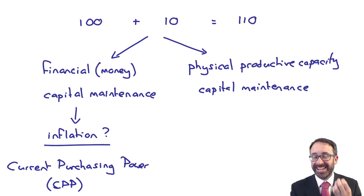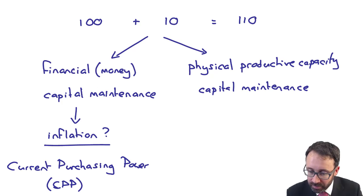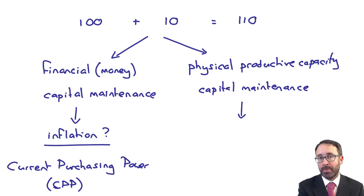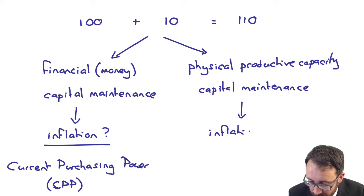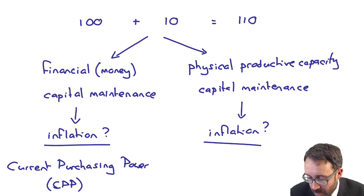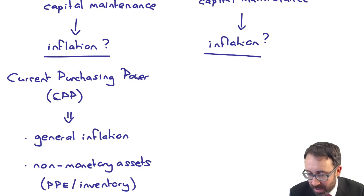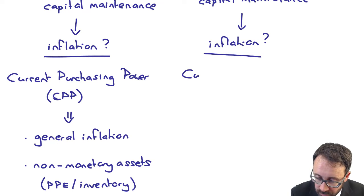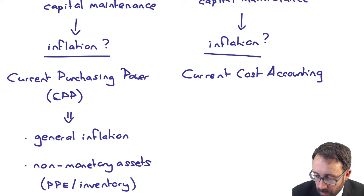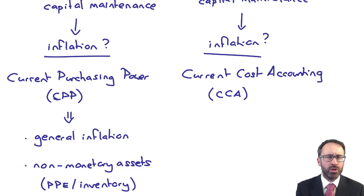So if inflation is significant, then we can't, and therefore we would need to adjust that specific asset for the level of inflation. So whereby inflation was taken account of in your financial capital maintenance using general inflation, here when we're incorporating inflation to see whether or not our capital has been maintained, we're going to use what's referred to as your current cost accounting, or if you like, CCA for short. Okay?